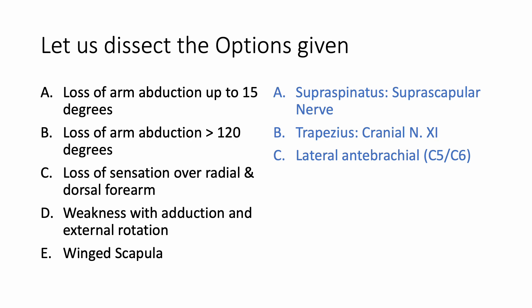Option D states weakness with adduction and external rotation — so unable to adduct and externally rotate. That is the function of the teres minor muscle. Teres minor is part of the rotator cuff and is supplied by the axillary nerve. So this is the right answer.